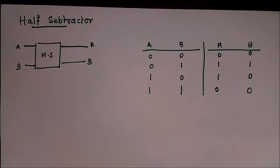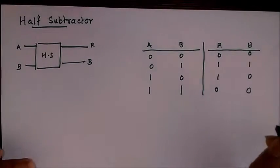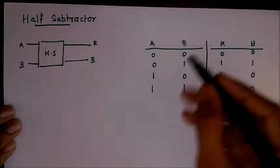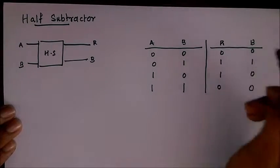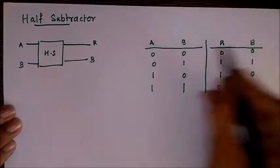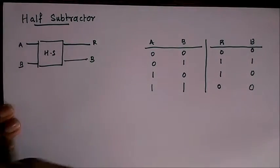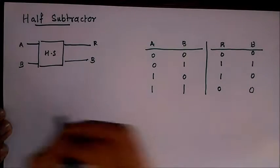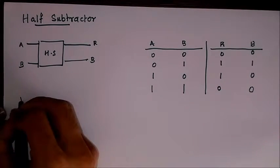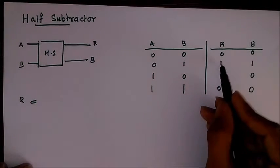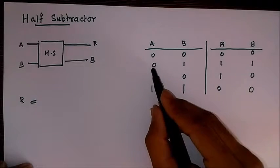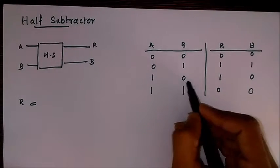Once we got the truth table, the next step is we have to find out equations or relation between the result and the two inputs, and borrow and the two inputs. That is, we have to represent R and B in terms of A and B separately. First we take R. As you can see, it's one when either of the input is one, so A̅B + AB̅ will be equal to R.